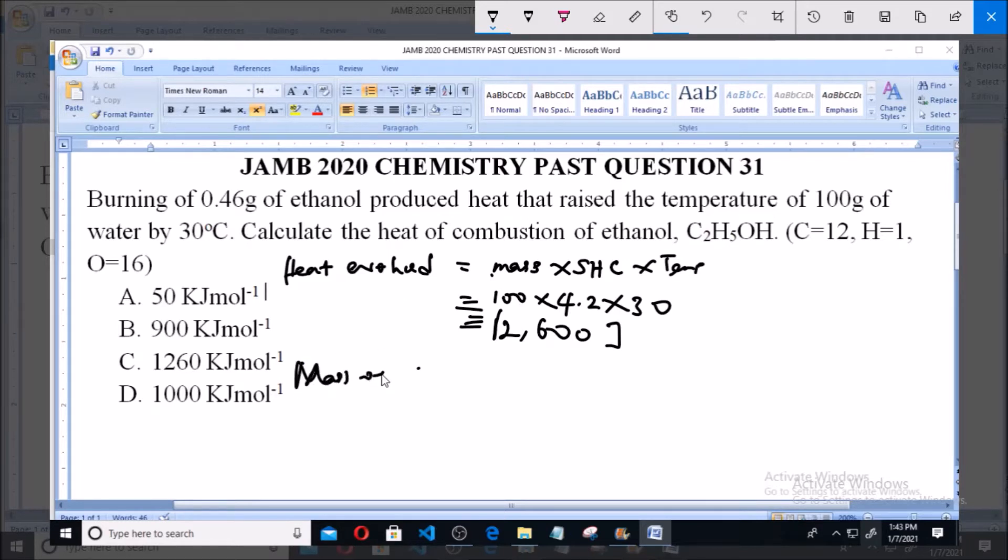Mass of ethanol burnt is 0.46 grams. The relative molecular mass of ethanol, C2H5OH, is calculated as 2 carbon times 12, plus 6 hydrogen times 1, plus oxygen which is 16, giving us 46.